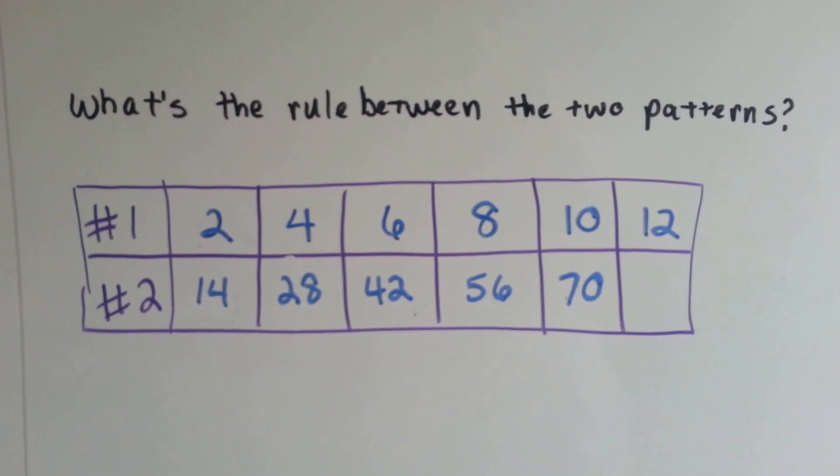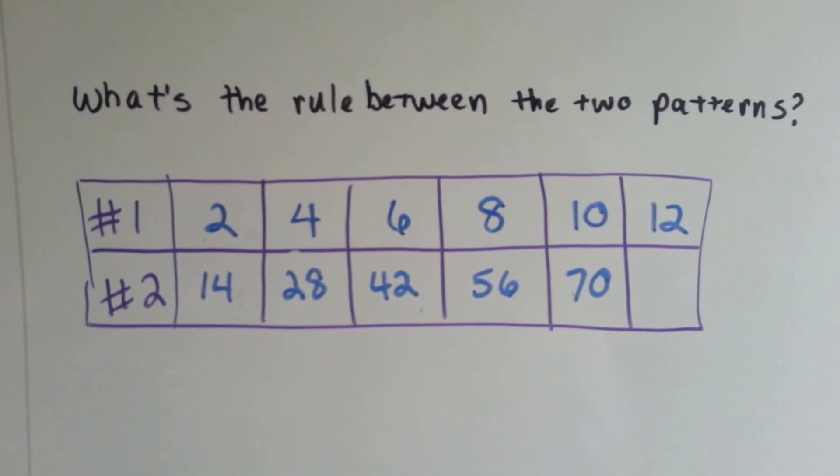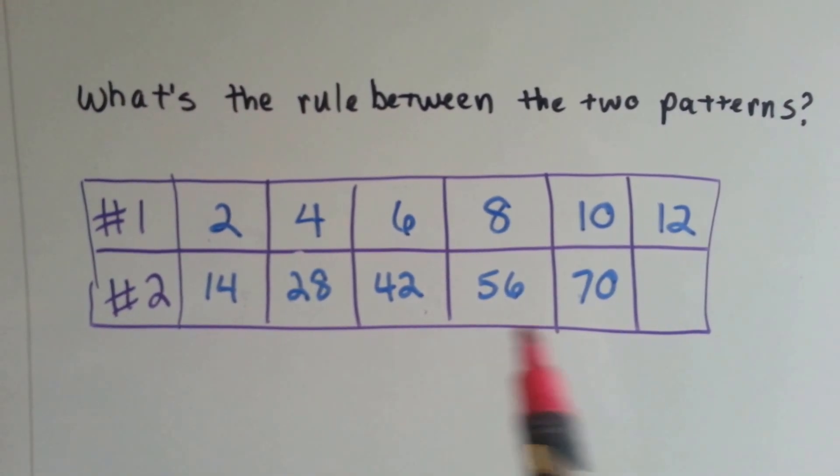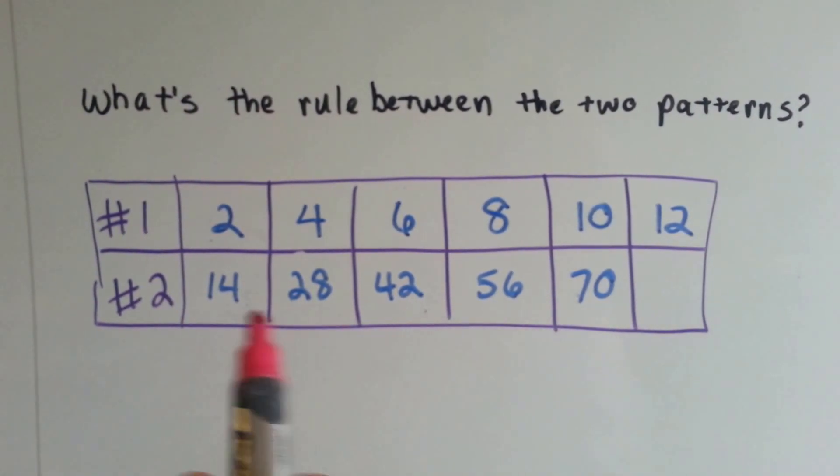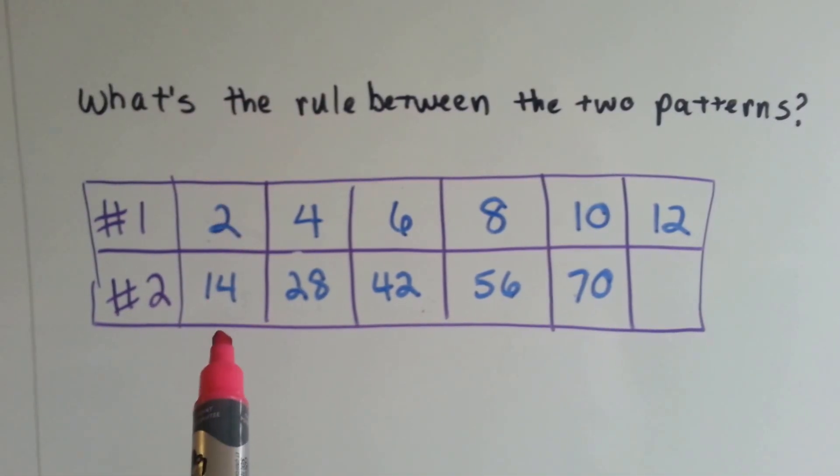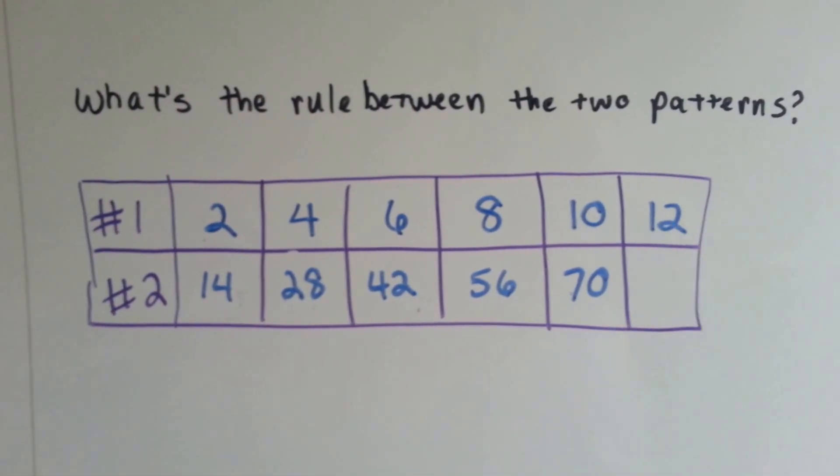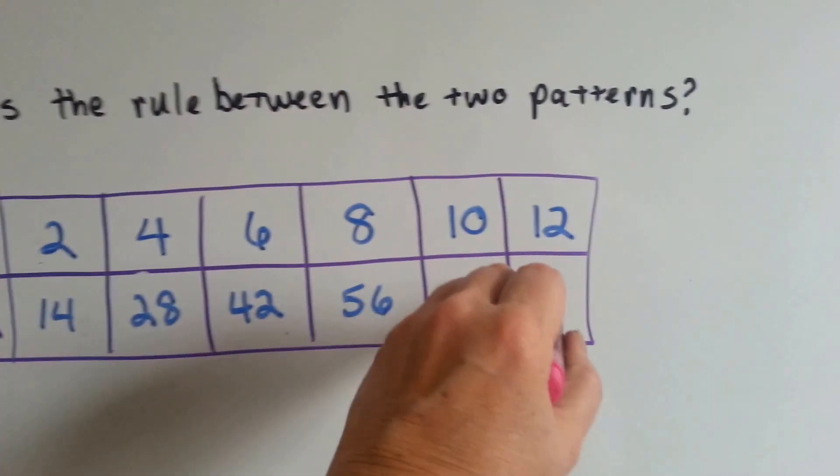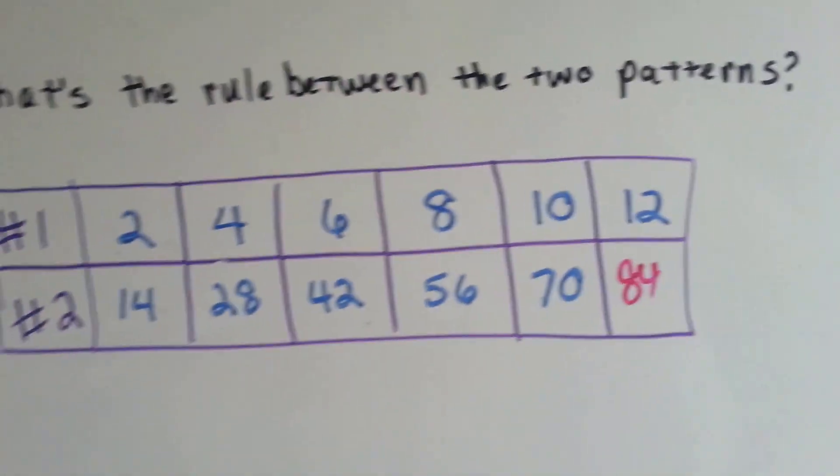The 10 and 70 might help you. But if you know your times table, if you said they're multiplied by 7, you're right. So if we multiply 12 times 7, we'll get 84 and we'll have the missing number.